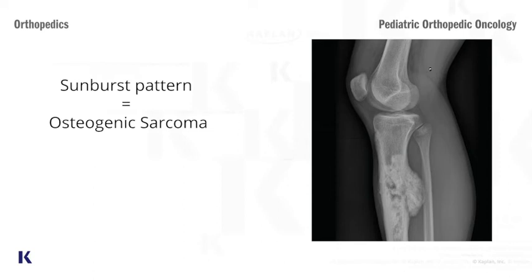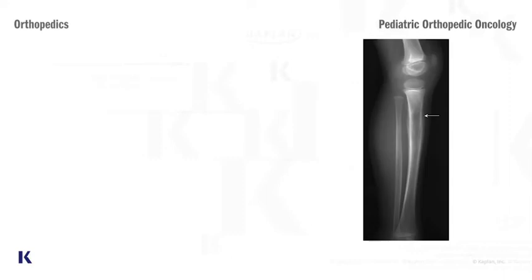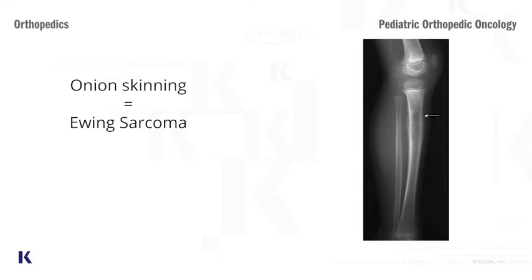...that's an osteogenic sarcoma. If you see an x-ray that looks like onion skinning, that's a Ewing's sarcoma.